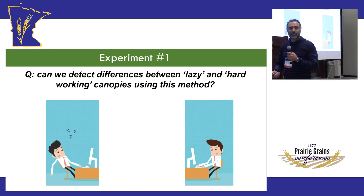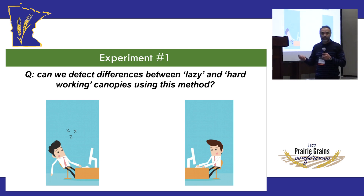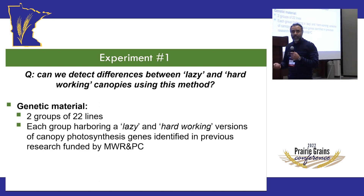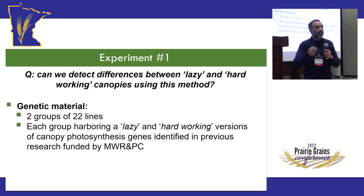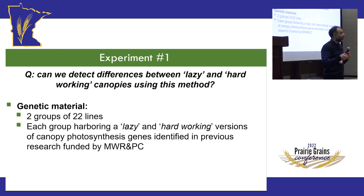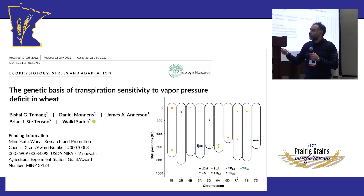We had two experiments. Starting with the first: the question for wheat was whether we can detect differences between lazy and hard-working canopies using this method. We selected two groups of 22 lines — already increasing throughput into the two-digit realm. Each group has a lazy or hard-working version of a gene controlling canopy photosynthesis. This comes from a paper we just published, funded by you, where we looked at canopy traits in a controlled environment, mapped very important genes, and made those genetic markers freely available to breeders.